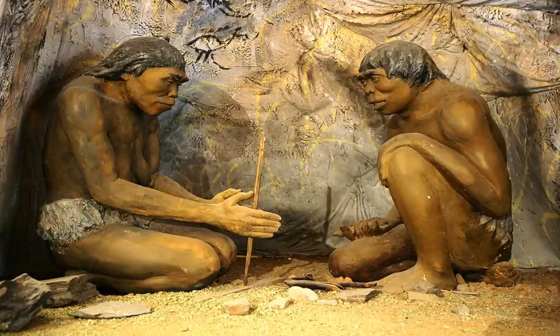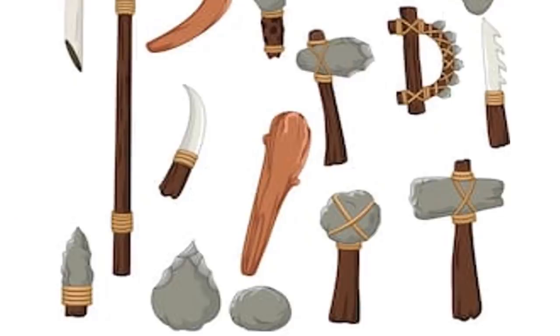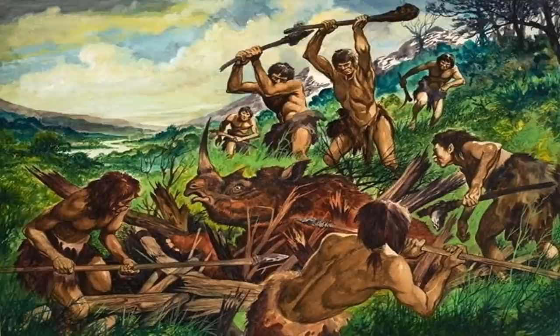Earlier humans used wedges made of hard rocks and stones to hunt, cut and trim trees, and carve stones.